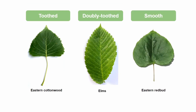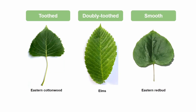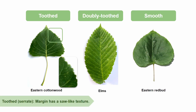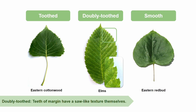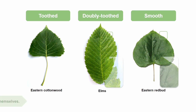Besides being entire or lobed, leaves can be toothed, otherwise known as serrate, or they can be smooth. When a leaf is toothed, its margin has a saw-like texture to it. An example of this would be Populus deltoides, otherwise known as eastern cottonwood. We can take it a step further and look at a leaf that is doubly-toothed — the teeth of the margin have a saw-like texture themselves. An example of a genus with doubly-toothed leaves would be Ulmus, otherwise known as elm. Lastly, for smooth leaves, there are no teeth present on the leaf margin. An example of this would be the eastern redbud.